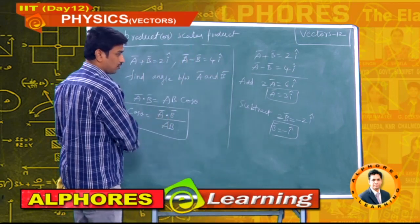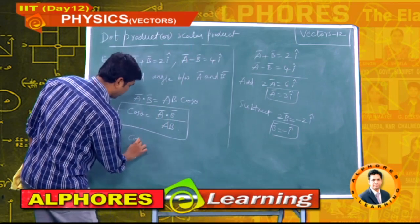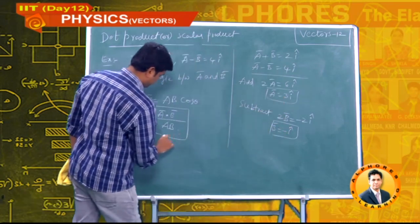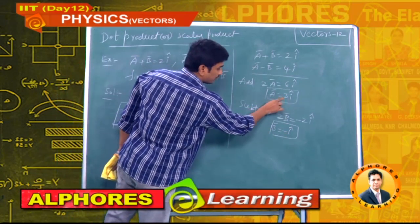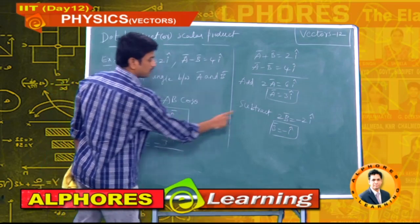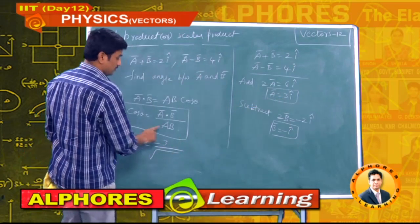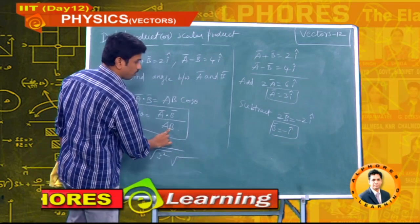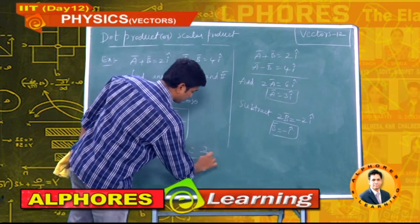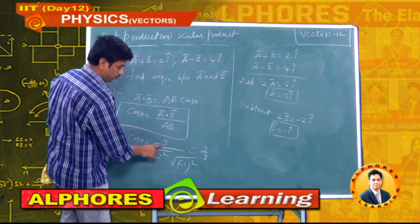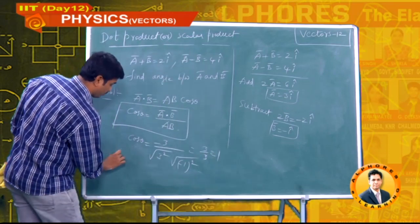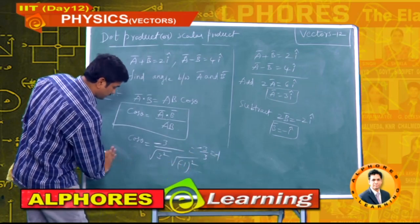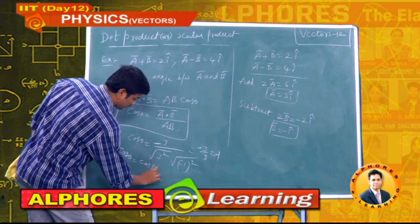Now we calculate ā · b̄ = 3î · (−î) = 3 × (−1) = −3. The magnitude of ā is √(3²) = 3, and the magnitude of b̄ is √((−1)²) = 1. So cosθ = −3 / (3 × 1) = −1. Since cosθ = −1, that equals cos180°.